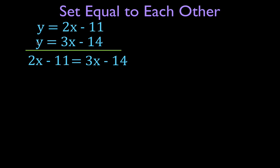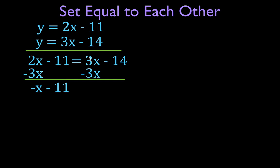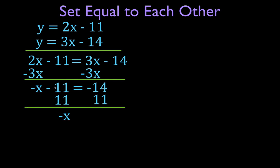I've eliminated the y's and I can solve for x. I'm going to move all x values to the left-hand side and all constants to the right-hand side. I subtract 3x from both sides: 2x minus 3x gives minus x, and minus 11 stays. On the other side 3x minus 3x is zero, leaving minus 14. Then I add 11 to both sides: minus x equals minus 3. Dividing both sides by minus 1 gives x equals 3.